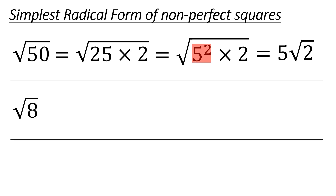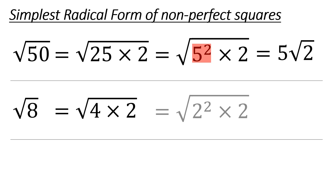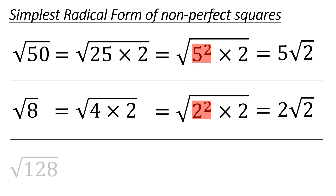Let's do another one: square root of 8. You can think of 8 as 4 times 2. That 4 is a perfect square — you can think of it as 2 to the second — and therefore it can go on the outside as a regular 2. But there's still a 2 left over that was a factor that wasn't a perfect square.